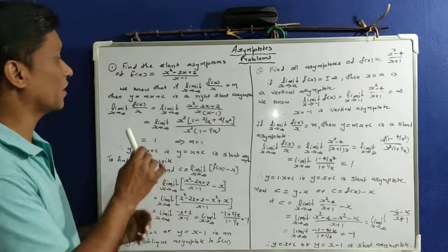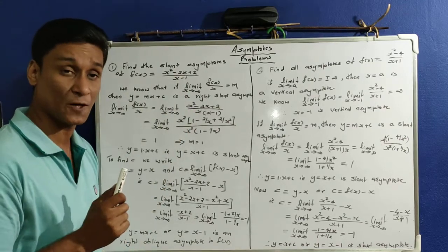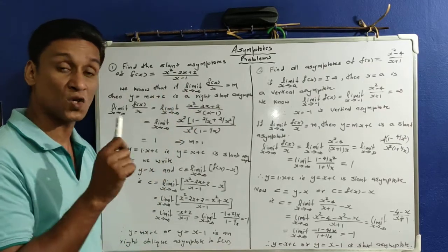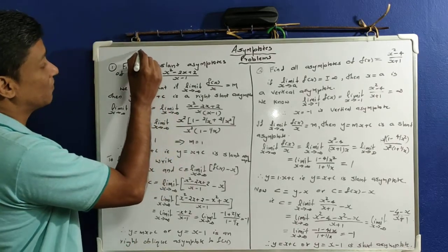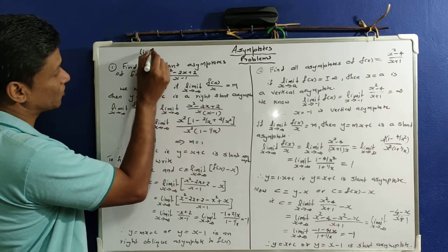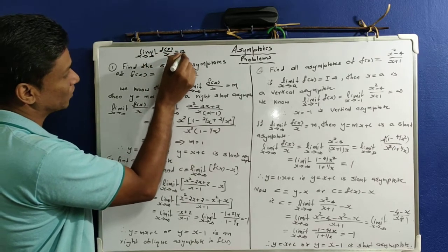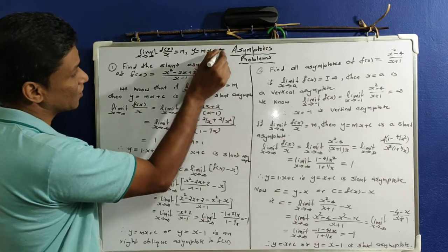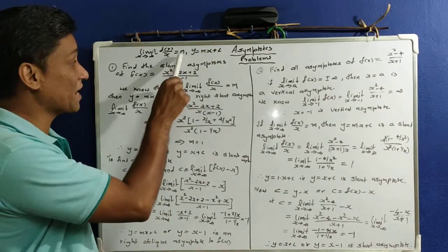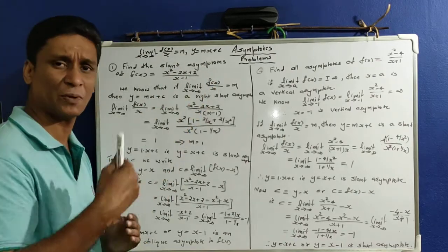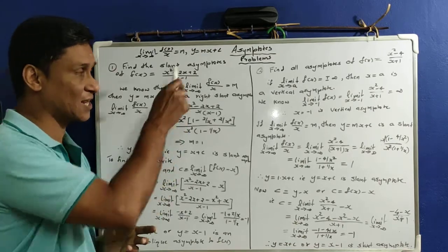We will now do a problem: find the slant asymptote of f(x) = (x² − 2x + 2) / (x − 1). The definition of a slant asymptote is: if the limit as x tends to infinity of f(x)/x equals m, then y = mx + c is a slant asymptote.